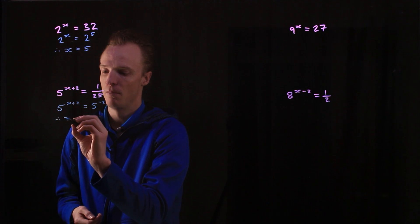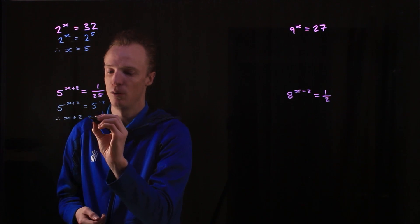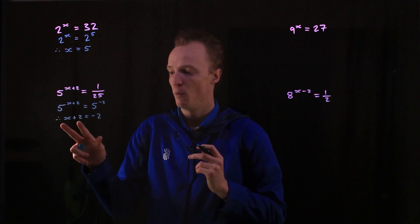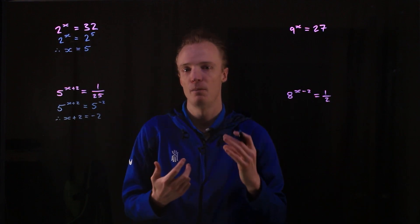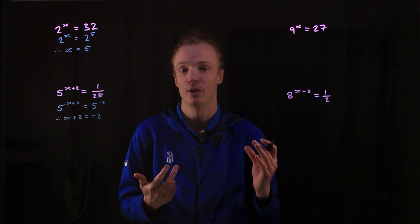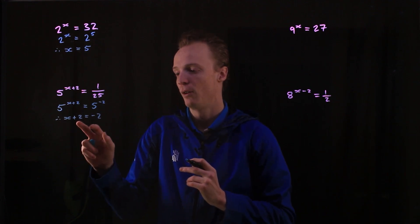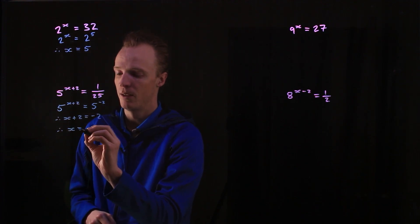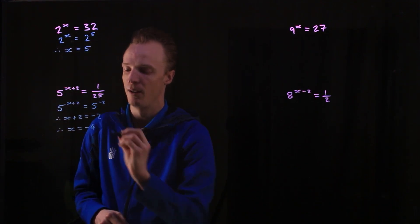Therefore, my x plus 2 must also equal negative 2. And once I've got this, I can now follow my normal solving equation rules that I've done before to find the value of x. So if I subtract 2 from both sides, I find that my x here, for this to be true, is equal to negative 4.